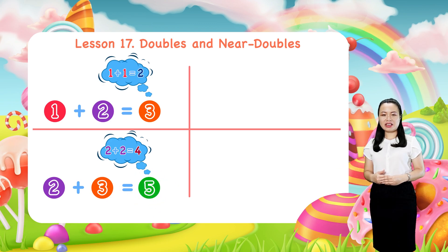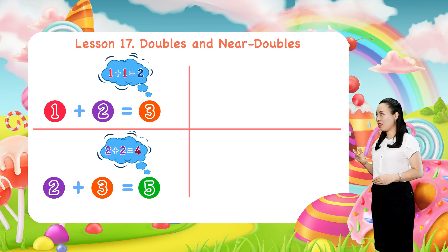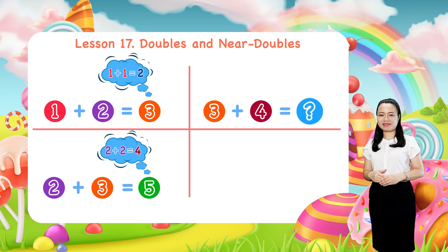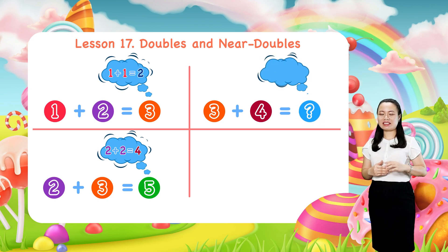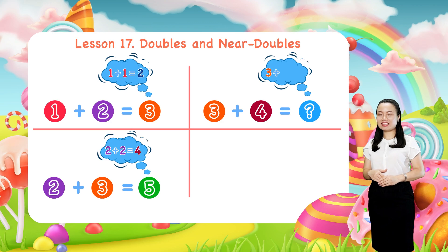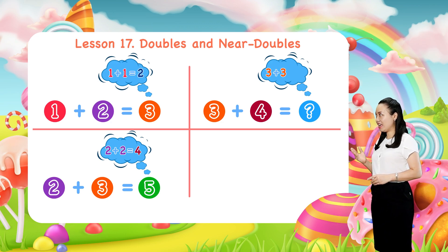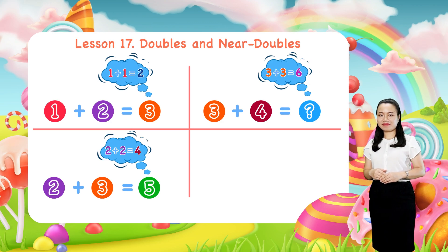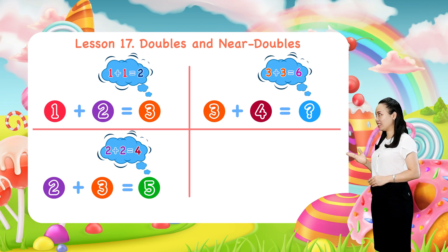If you have to add 3 plus 4, then think: 3 plus 3 equals 6, then add on 1 to get 7.